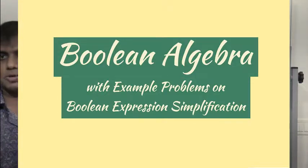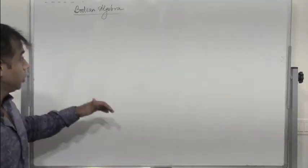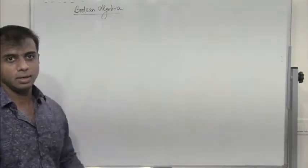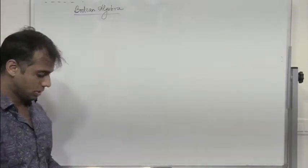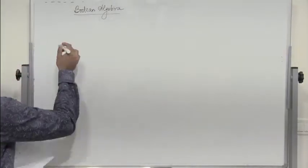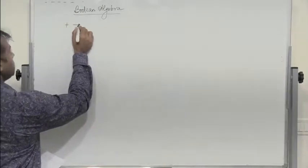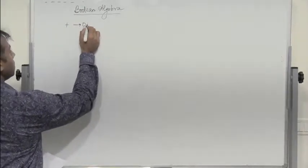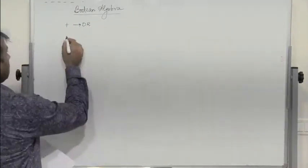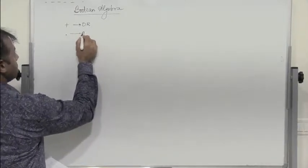Let us check some of the fundamental laws of Boolean algebra and how we can use this to simplify expressions. Now, a plus sign represents OR and a dot represents AND operation.